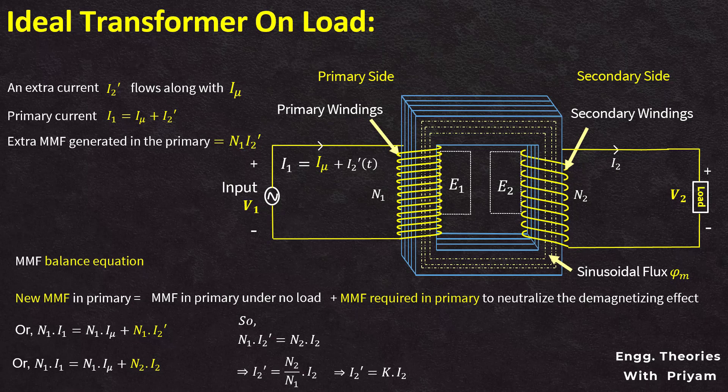Thus, when an ideal transformer is loaded and carries a secondary current I2, then a current I1 must flow in the primary winding to maintain the magnetomotive force balance. In other words, the primary must draw enough current to neutralize the demagnetizing effect of the secondary current so that the main flux remains constant. So, when the current in the secondary increases, the current in the primary must increase in unison to maintain the main flux constant, and the power input automatically increases with the output.